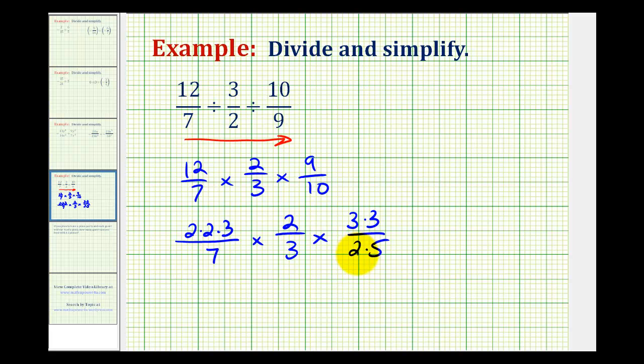In this form, we can easily identify all the common factors that simplify to one. So here we have a three over three, and here we have a two over a two that simplifies to one.